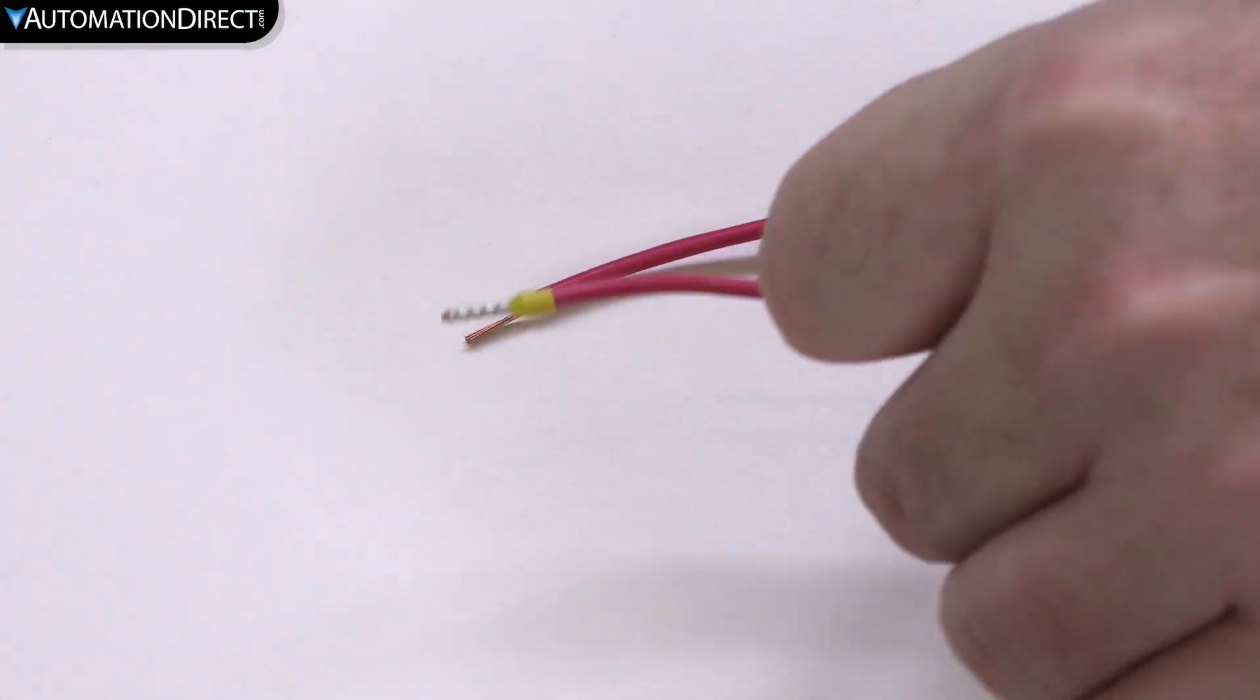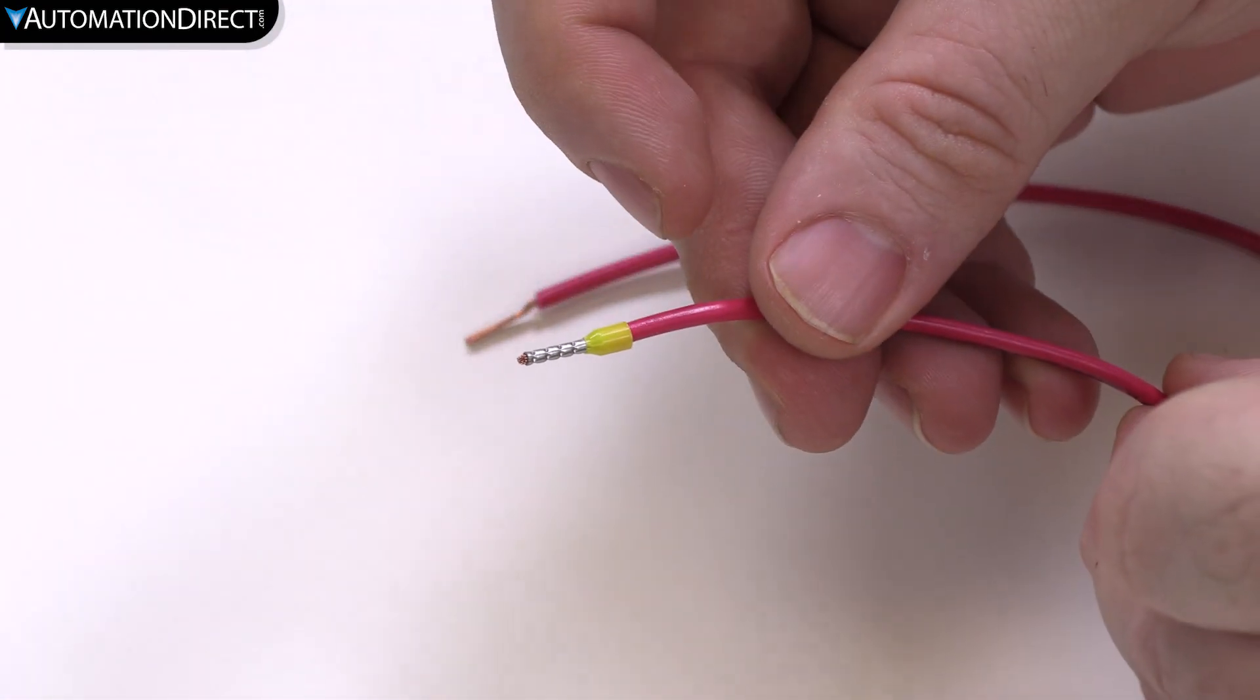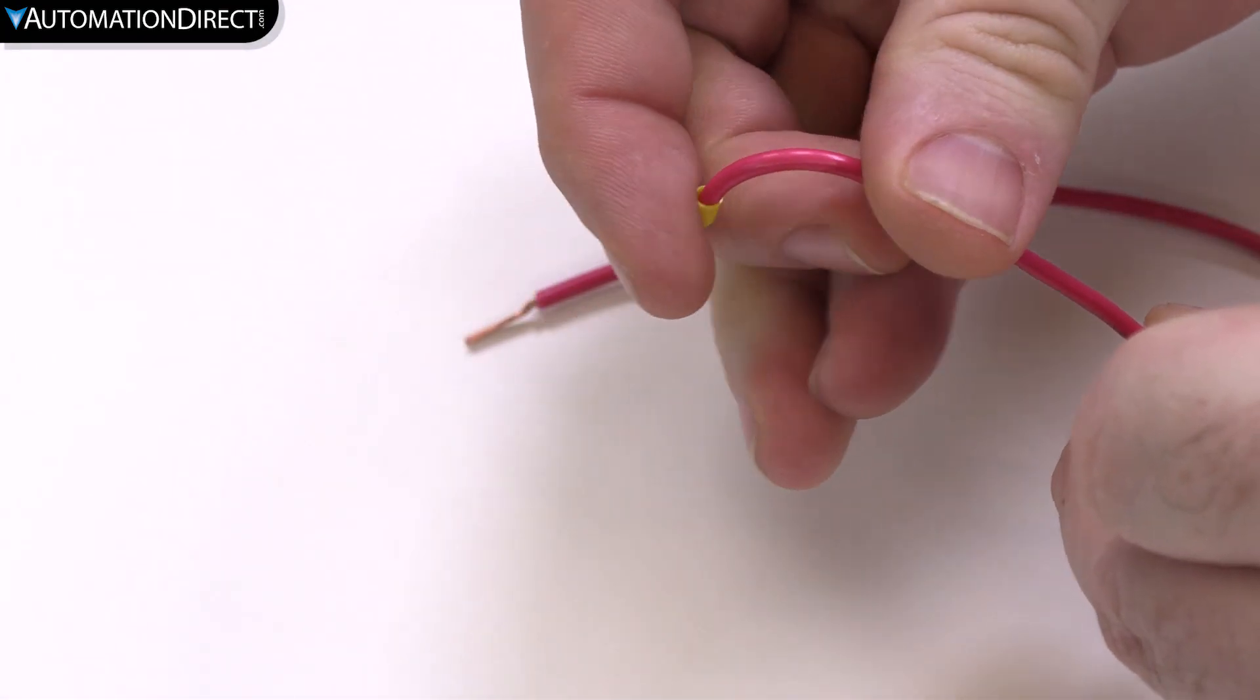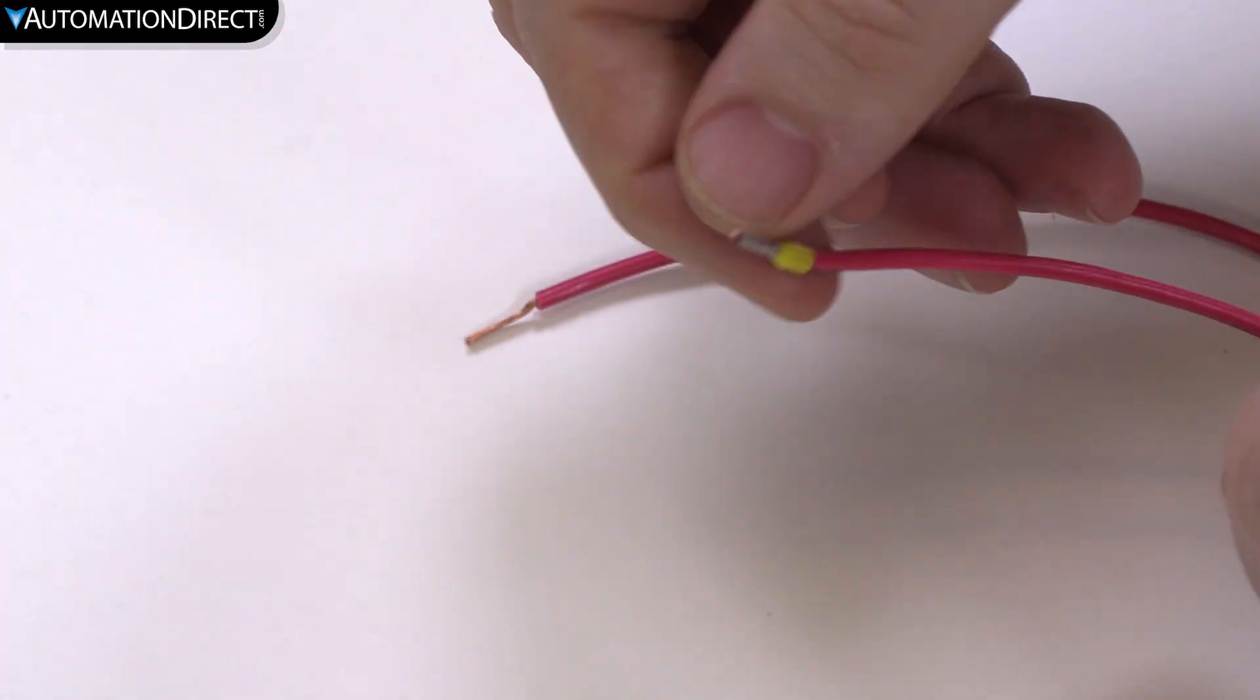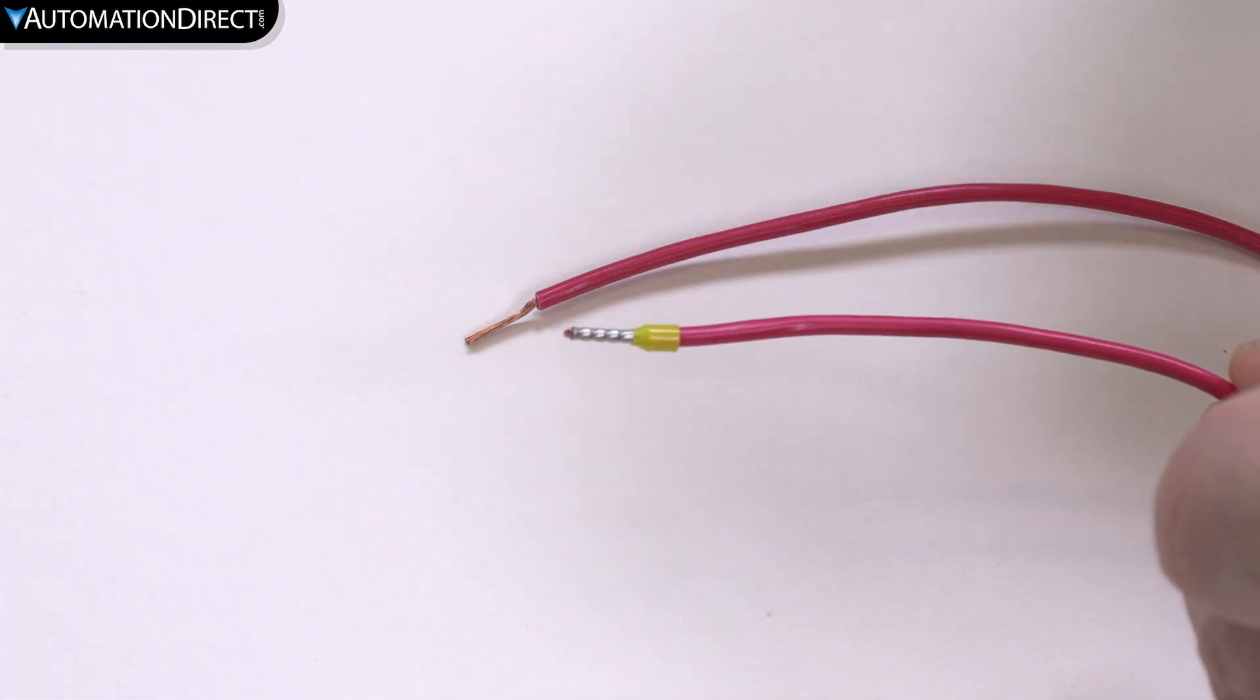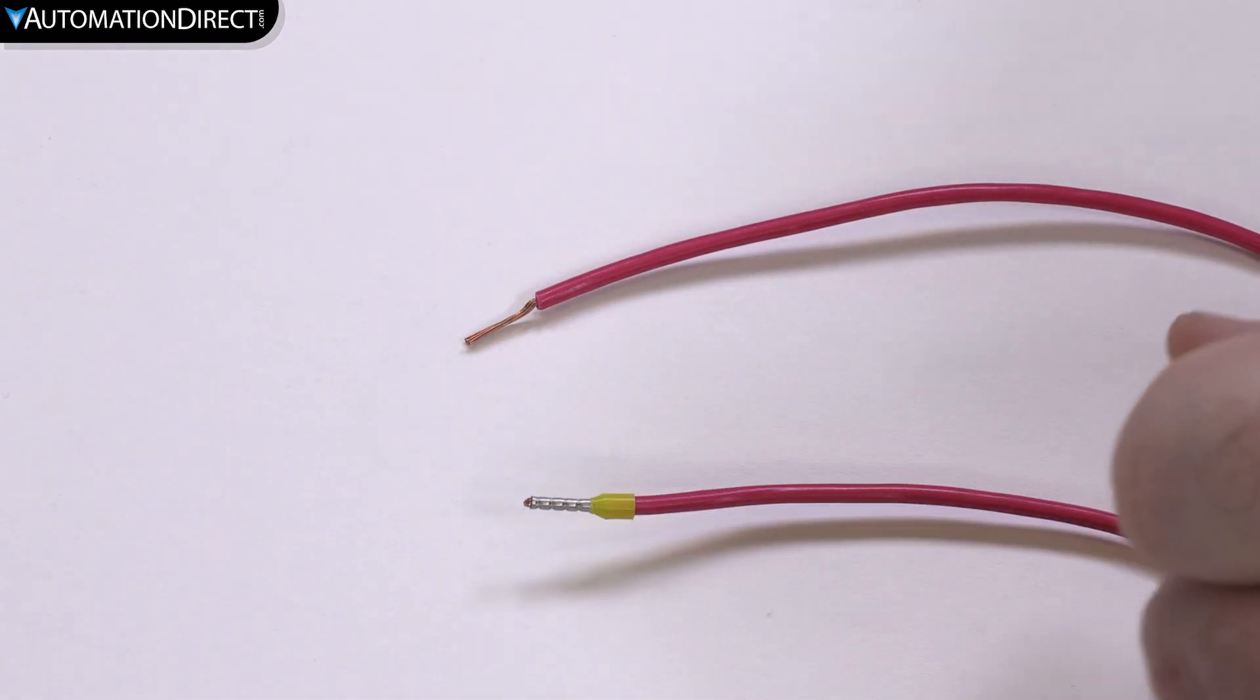A wiring ferrule takes a pliable stripped wire and makes it rigid while also providing an insulated strain gauge at the junction of the wire and insulation. This will give you a reliable electrical connection while reducing the chance of electrical shorts.